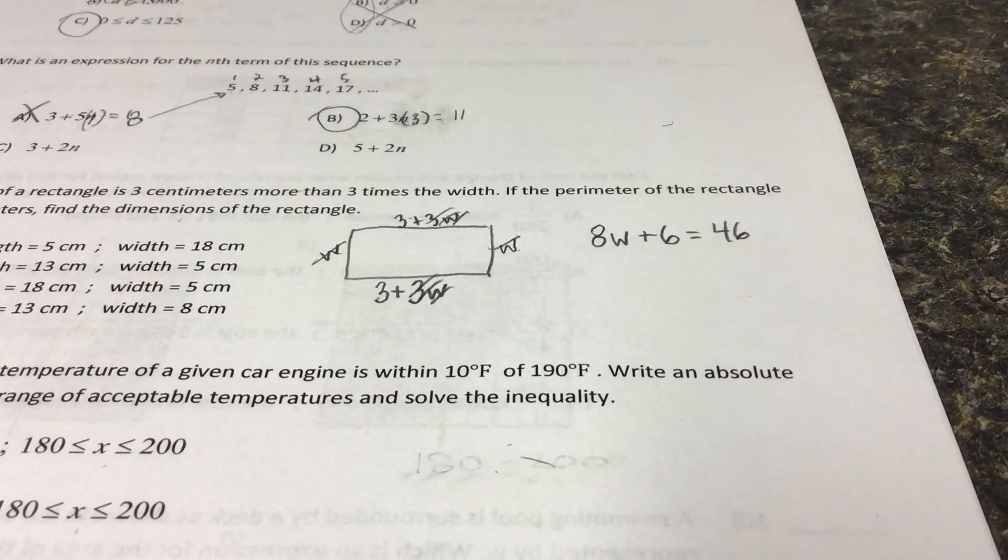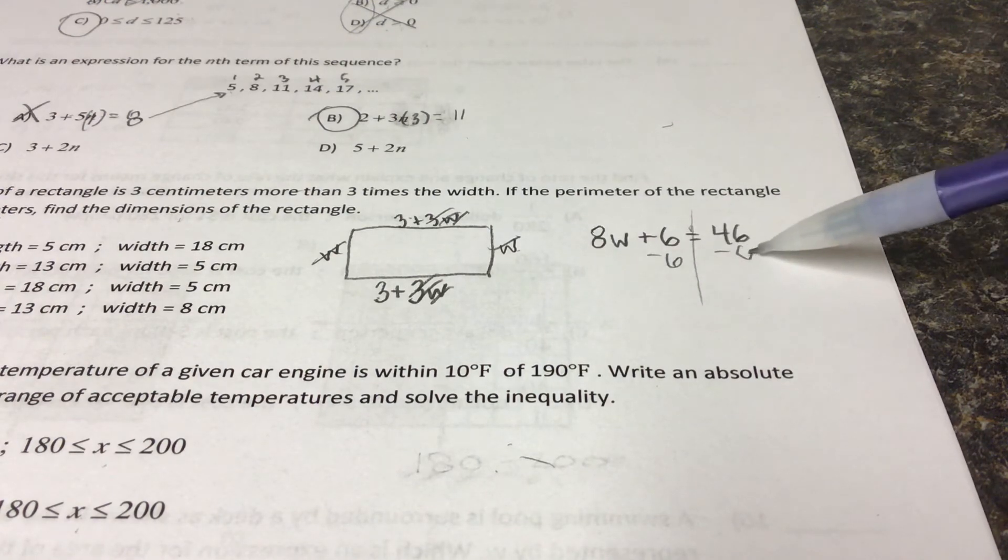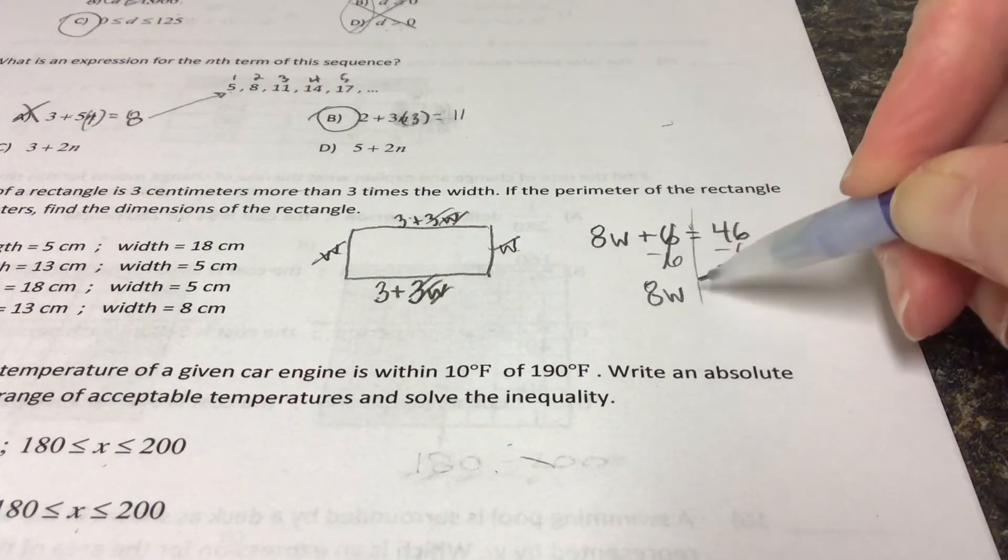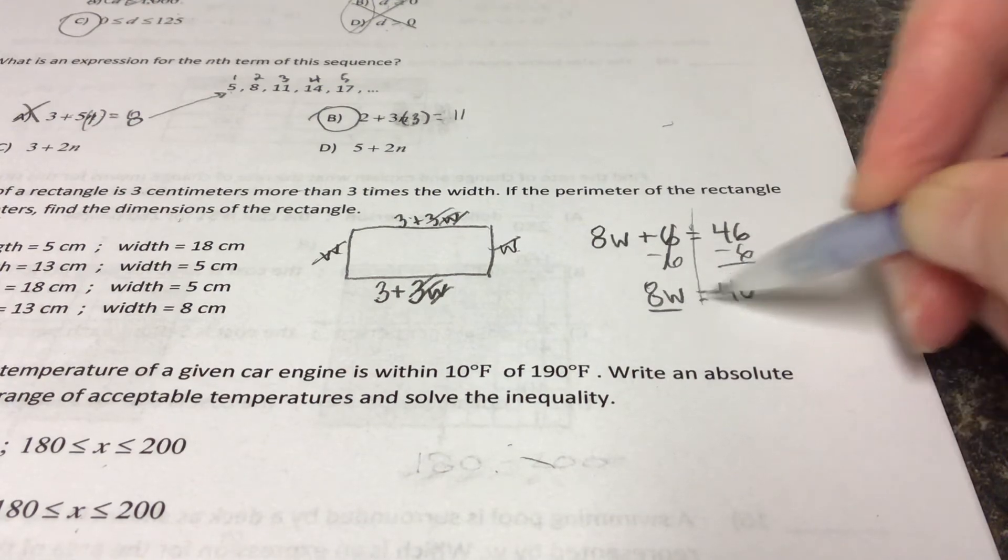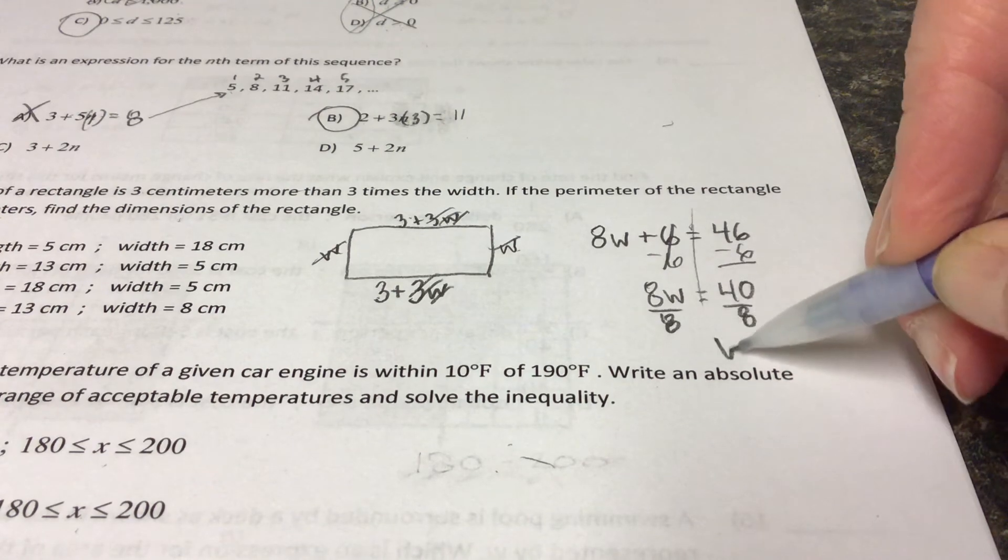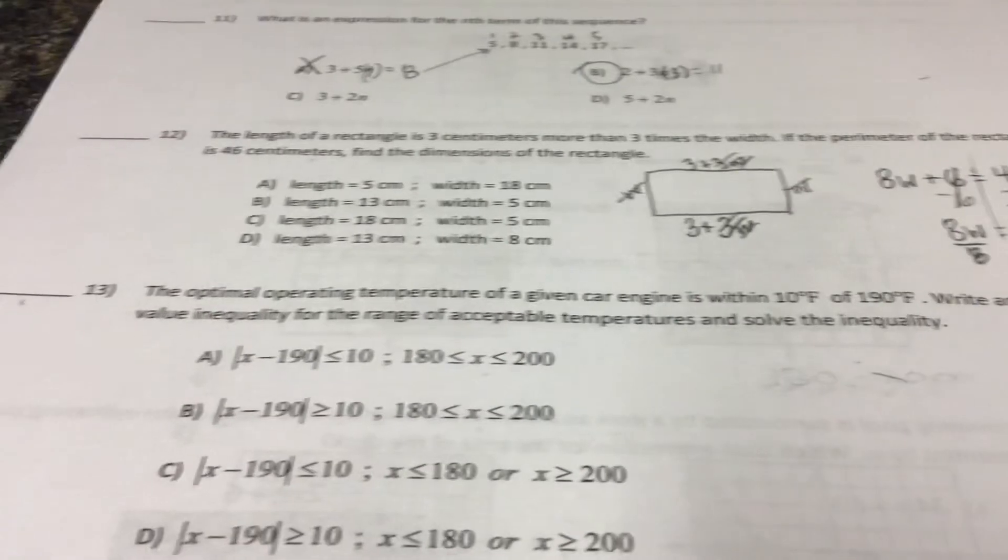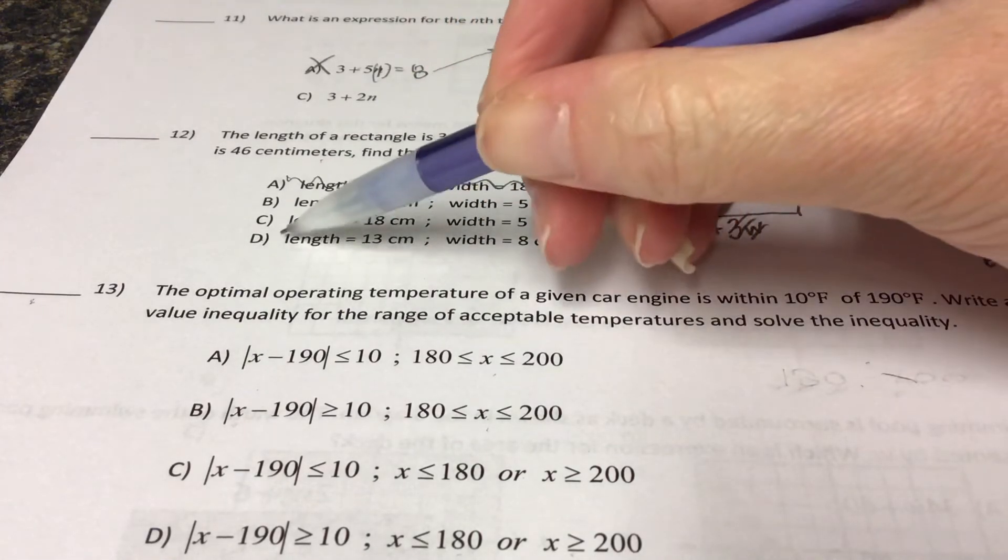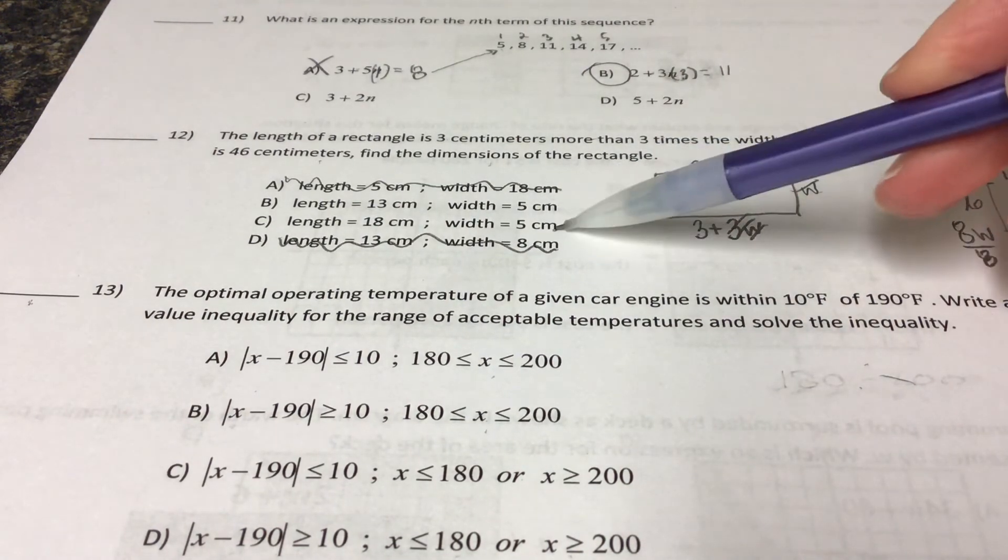Now we've got to solve this. So we subtract six off of both sides. That's 8W because that goes away. And this would be forty. So we divide both sides by eight. That means that our width is going to be equal to five. So right away, we can eliminate this one and we can eliminate this one because that's not our width. It says the width is five.